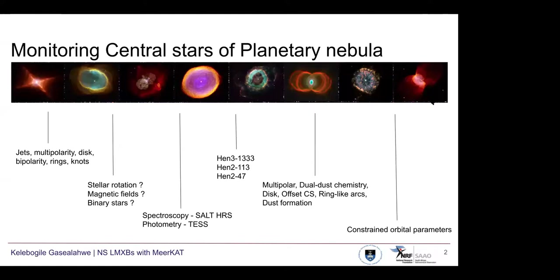My master's project was monitoring central stars of planetary nebulae in search of binary central stars. Planetary nebulae form when the star ejects ionized material off the surface after the asymptotic giant branch. This ionized material that is blown off is the glowing nebula, which is mostly observed to be spherical in shape. However, many planetary nebulae are seen to have jets, multipolarity, disks, rings, and other features.